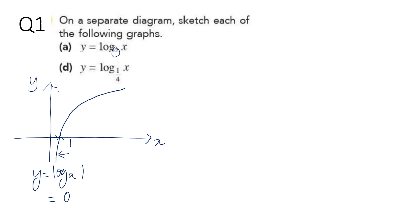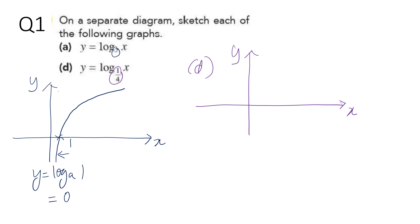For graph (d), if your base is more than 0 but less than 1, your graph of the logarithmic function will look like this. Again, this part of the curve does not touch the y-axis. But the x-intercept point is still (1, 0). You can just put 1 there.